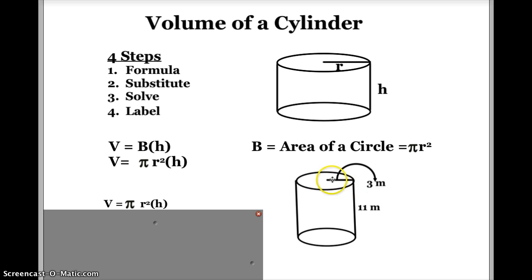If you look at the cylinder, the radius of the base is going to be 3 meters. And the height of the cylinder is going to be 11 meters. So I'm going to replace r with 3 and h with 11. So let's see what I did there. There you go. I replaced the r with 3 and the h with 11.